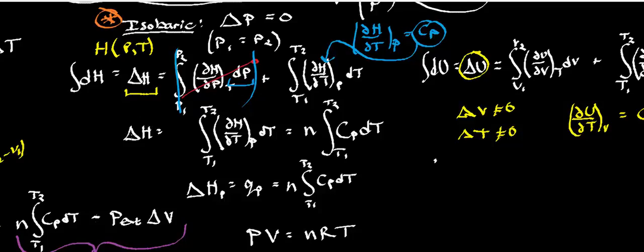That means all I'm left with here is delta H is partial of H with respect to T at constant P, dT from T1 to T2. But I just said that this entity right there is CP. So that means the delta H is going to be the number of moles times CP, dT from T1 to T2.